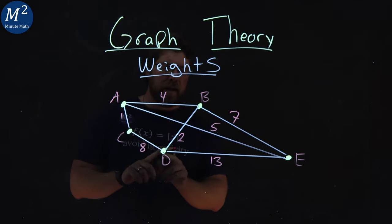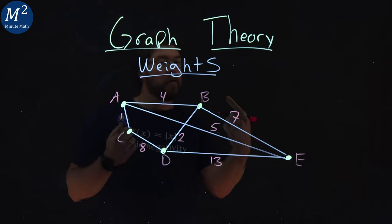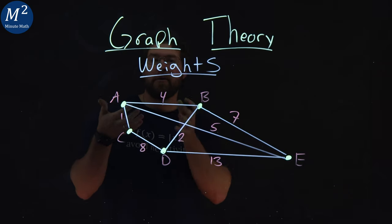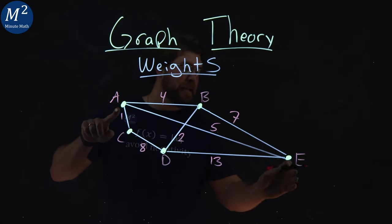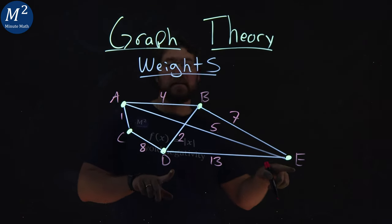Now our weights also, be careful—just because a line is longer than another line doesn't mean the weights are more. Notice A to E has a weight of five, which is less than D to E.